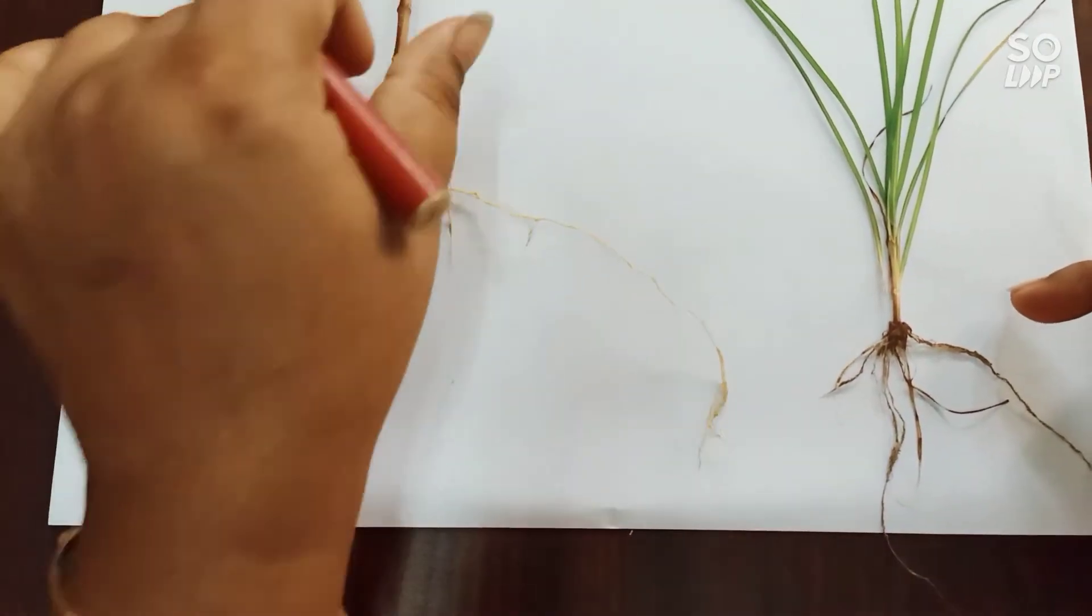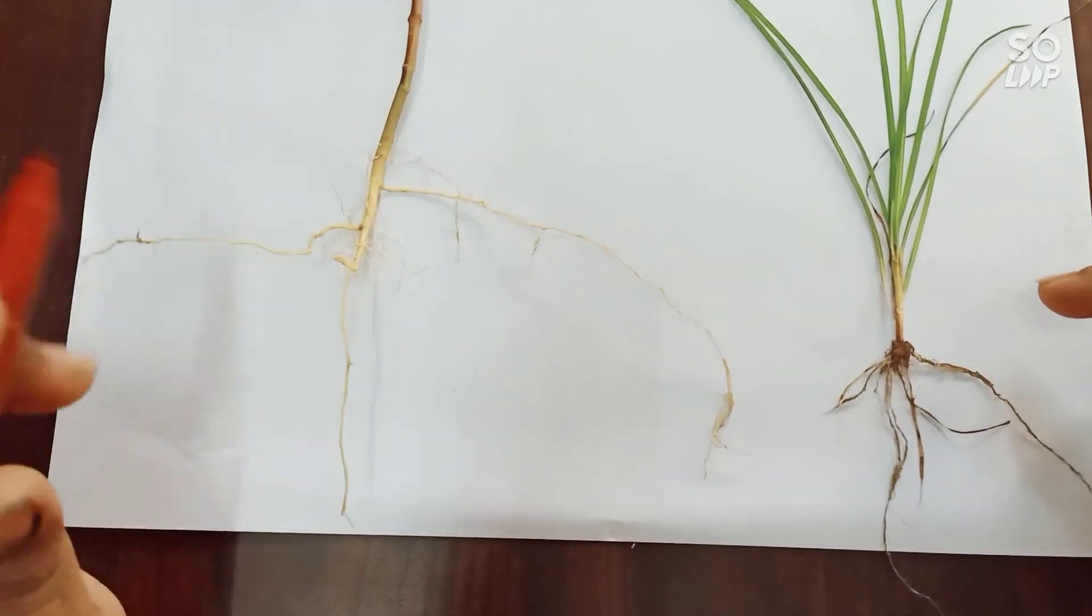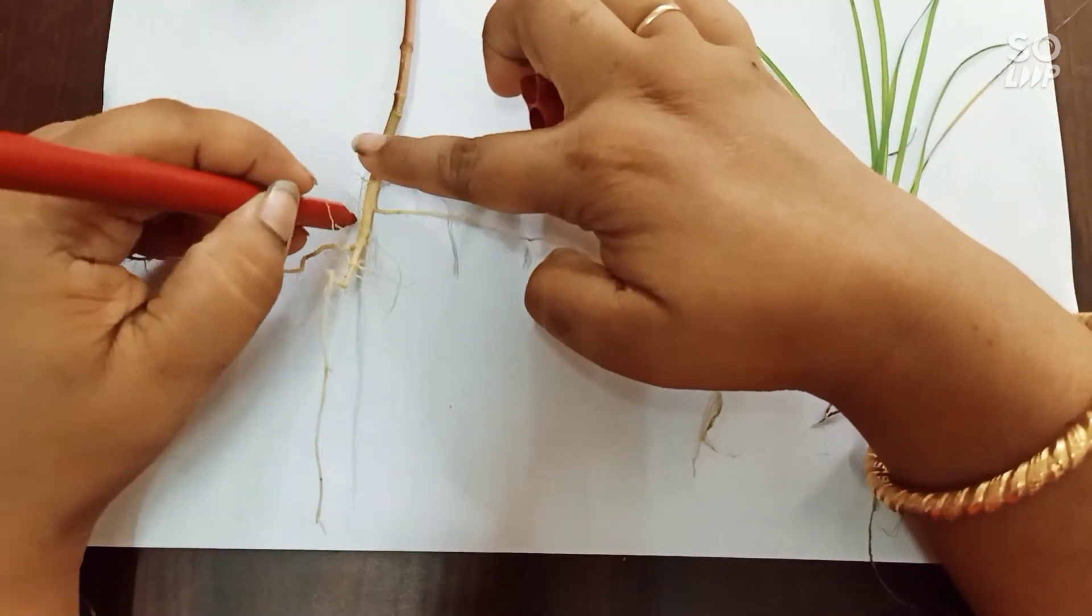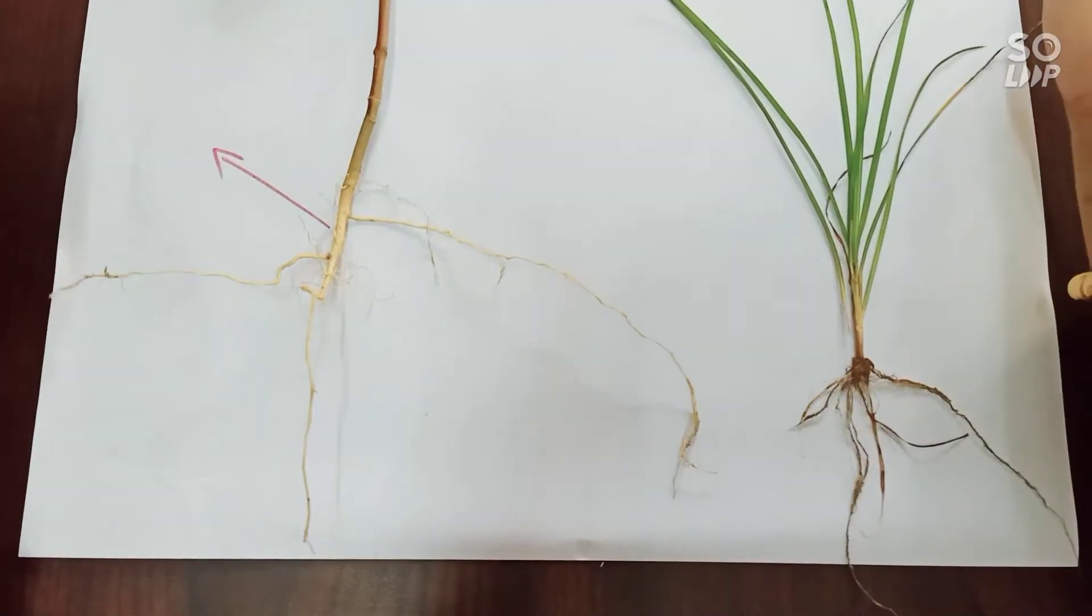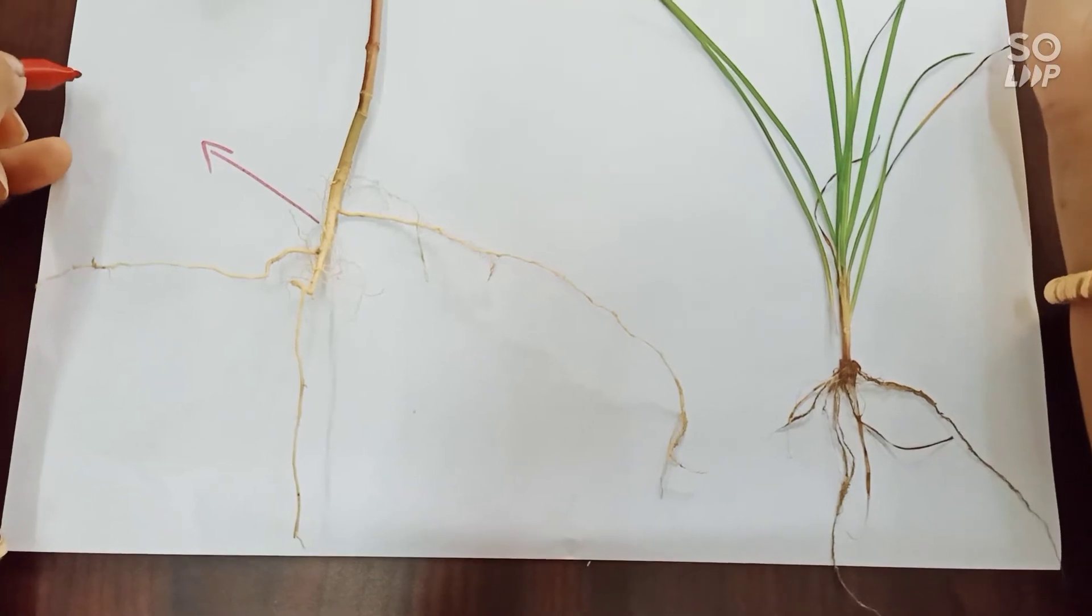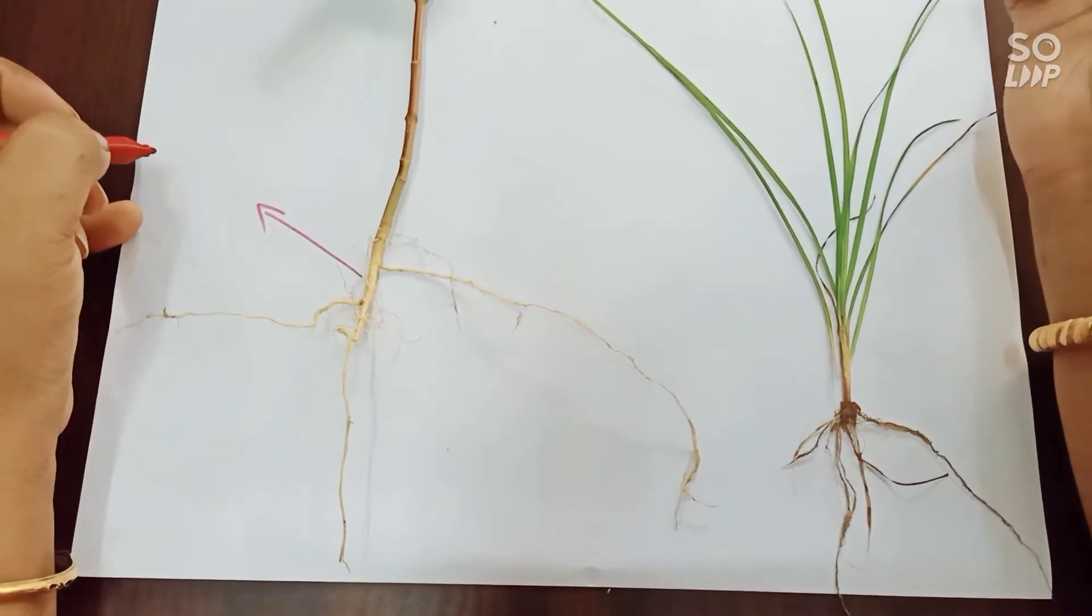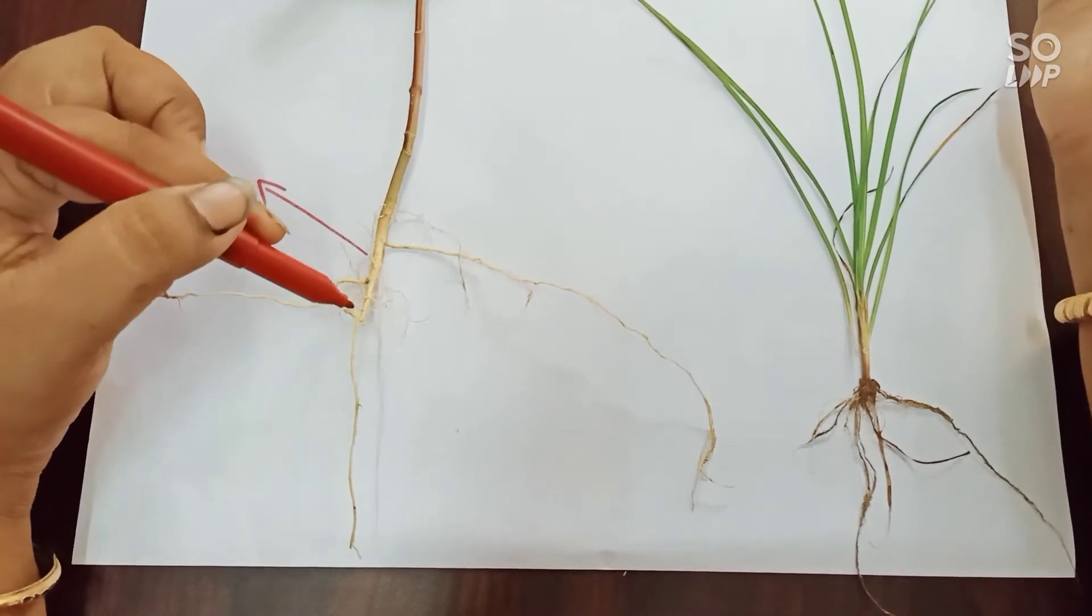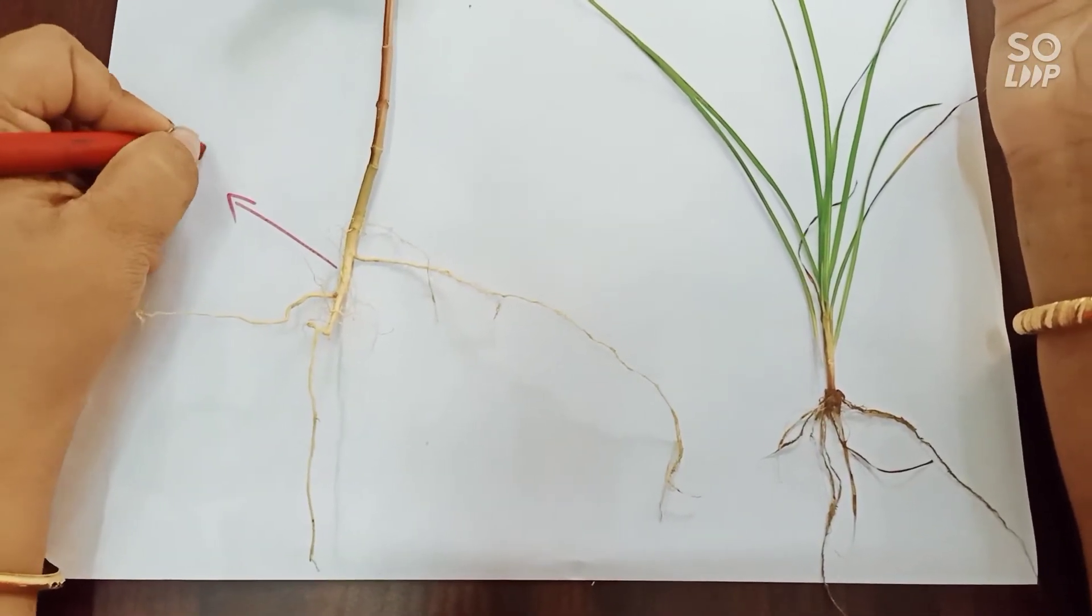So let's talk about this structure first. I'll pull this plant a bit here so that you can see this. One tapering end which can be seen. This tapering end is actually known as the main one, that is main of the tap root. You can see a tapering end. This is the first part. This is also known as the primary root.